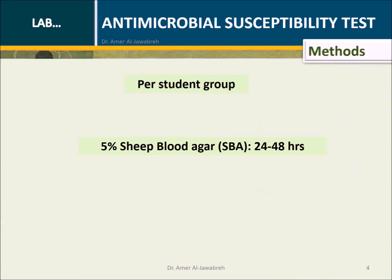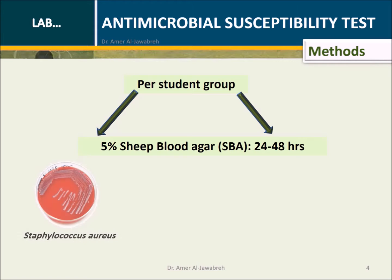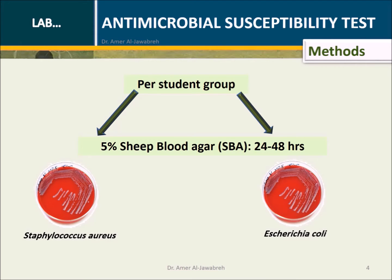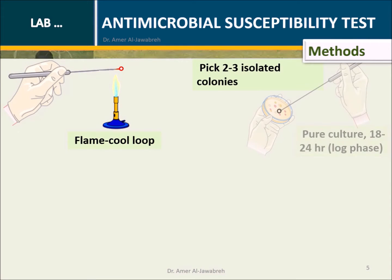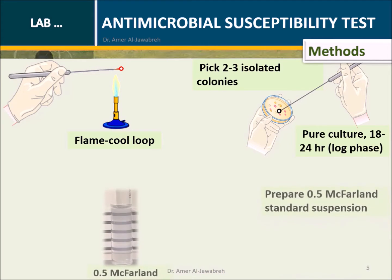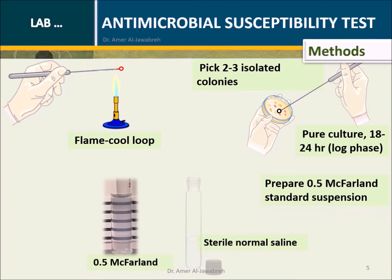Method: Provide each student crew with two sheep blood agar plates — one with Staphylococcus aureus and the other with Escherichia coli. Flame and cool the loop, then pick two to three isolated colonies from pure culture. Prepare a 0.5 McFarland standard suspension using sterile normal saline.